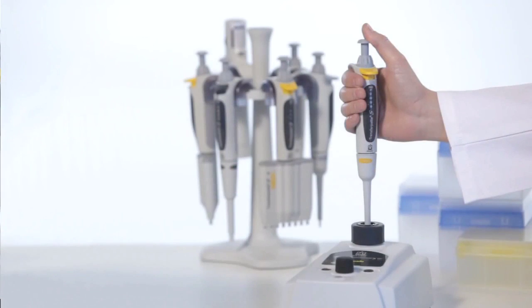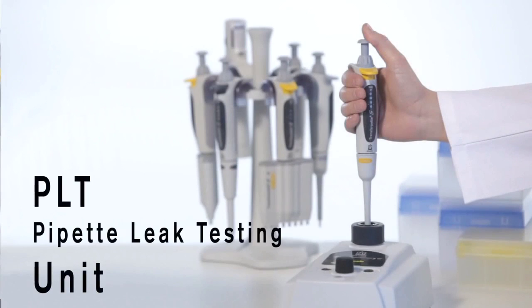Through fast and easy daily checks, you safeguard the intervals between mandatory gravimetric testing. With the PLT unit from Brandt, you decisively improve the process reliability of your pipetting systems.